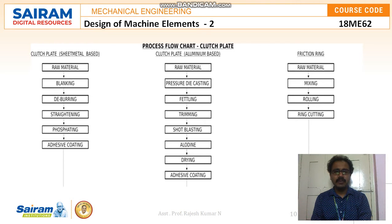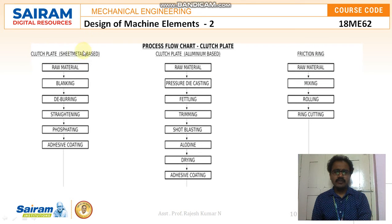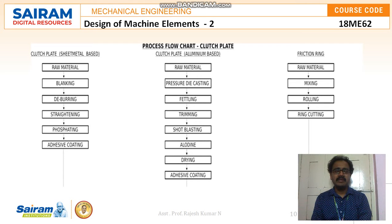Let me start with the process flowchart of any clutch plate — how the clutch plate is made. Here I have covered three different materials: the first is the sheet metal based clutch plate, the second is the aluminium based clutch plate, and the third is the friction ring based clutch plate. For the sheet metal based clutch plate, the raw material can be stainless steel or any aluminium alloy — whatever material is suitable for the requirements. That is why I didn't specify a single raw material name, since all sheet metals are mostly recommended for making clutch plates.